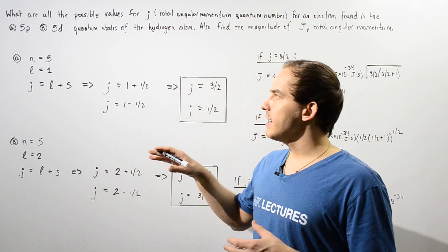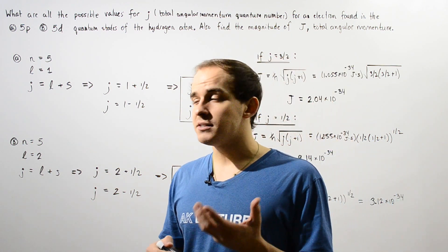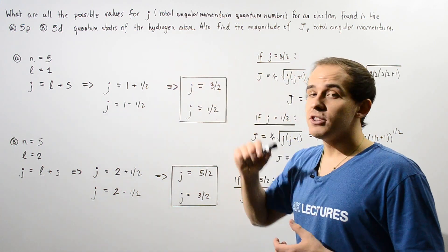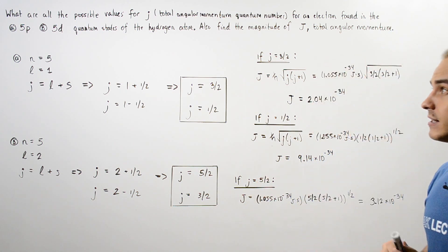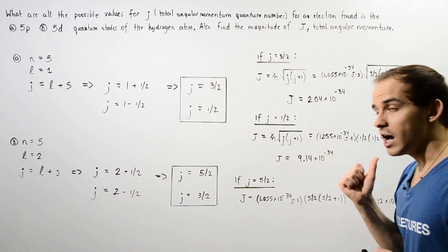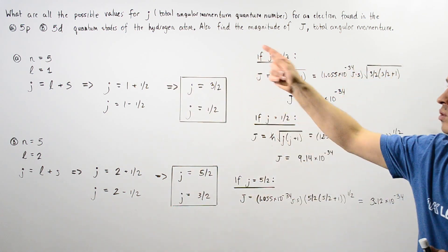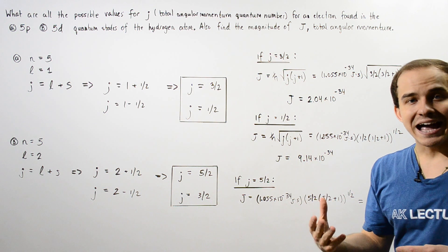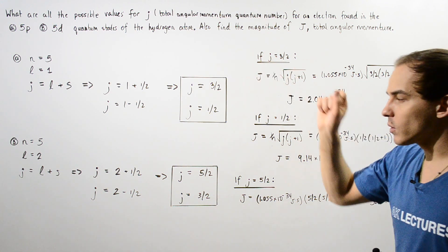Let's examine the following example that deals with the total angular momentum and the total angular momentum quantum number. What are all the possible values for J, the total angular momentum quantum number, for a single electron system in A, the 5P, and in B, the 5D quantum states of the hydrogen atom? Along with determining the possible values for the total angular momentum quantum number given by lowercase j, we also want to find the magnitude of uppercase J, the total angular momentum, for each specific lowercase j.